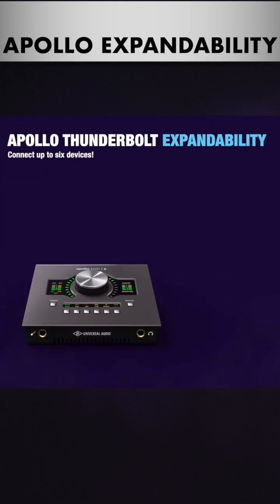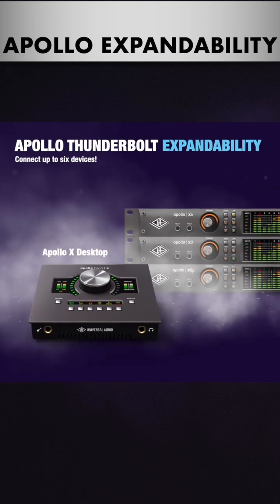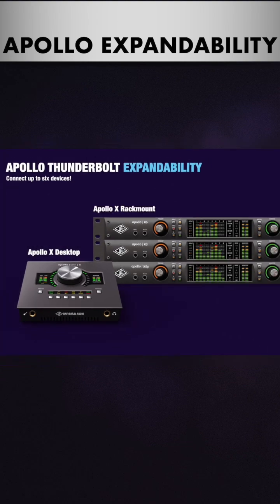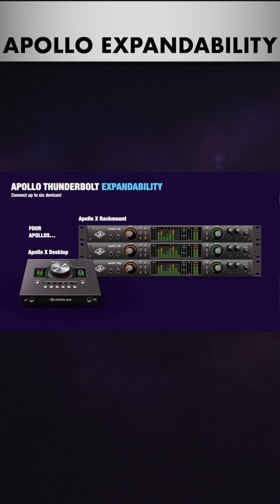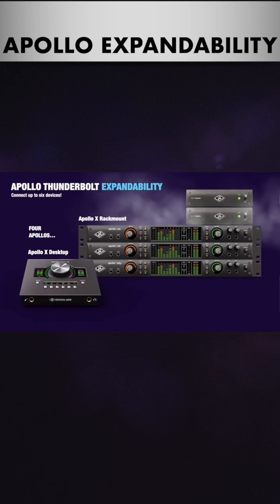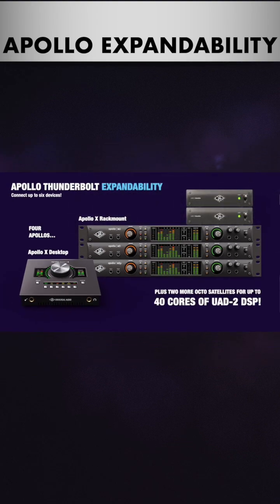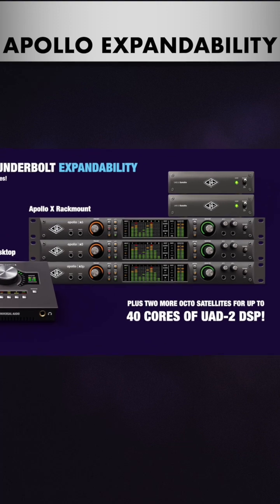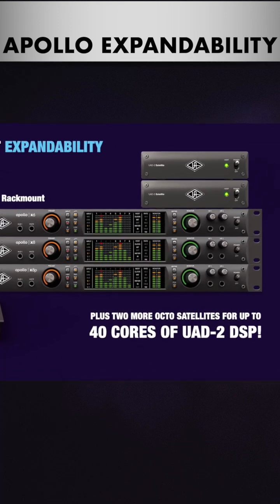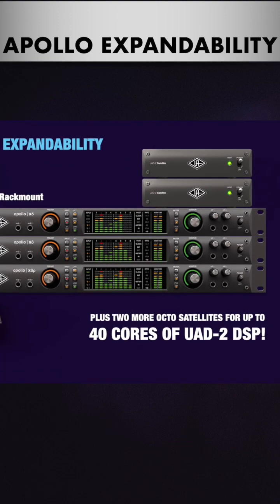Up to six UAD2 devices can be linked together over Thunderbolt, including up to four Apollo interfaces. You may start with one desktop interface such as an Apollo Solo, Twin, or X4, but you can add three rack units alongside these as your needs grow.